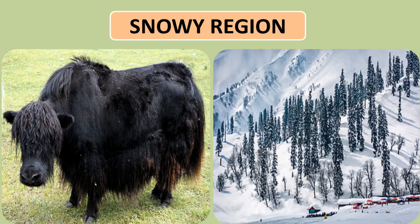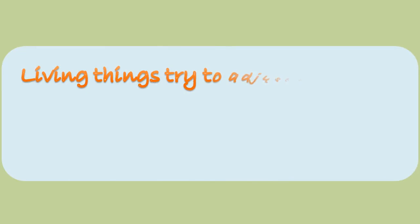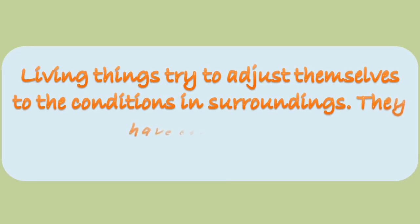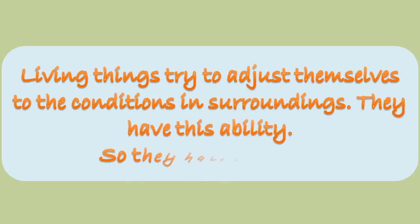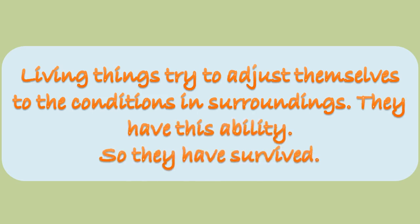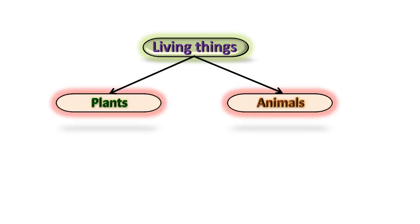So what do we understand from this? Living things try to adjust themselves to the conditions in their surroundings. They have this ability, and so they have survived. Generally, we divide living things into two groups: plants and animals.